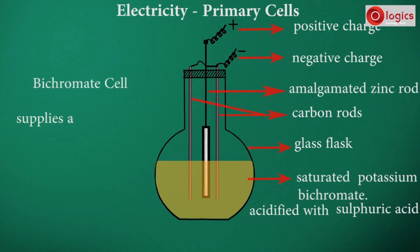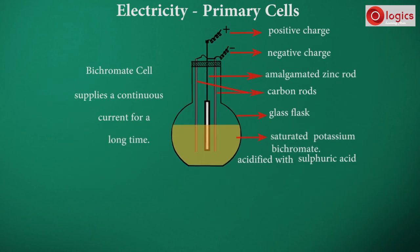Bichromate cell supplies a continuous current for a long time. Defects: It contains a corrosive liquid due to which accidents may occur.